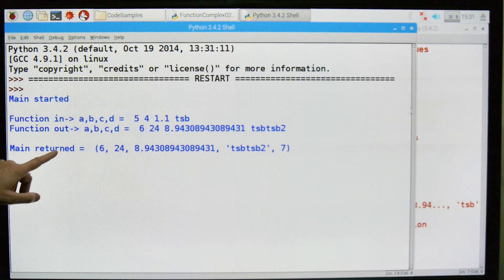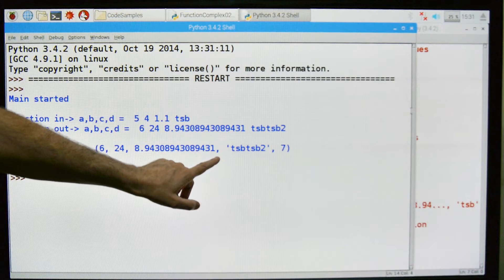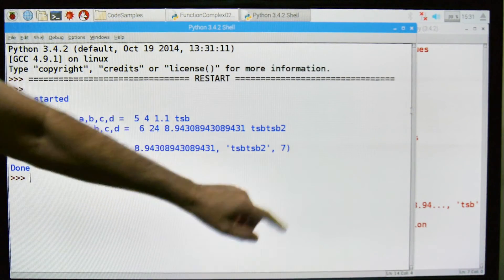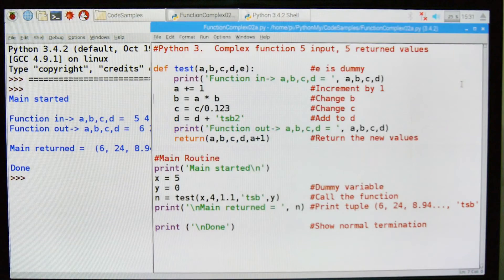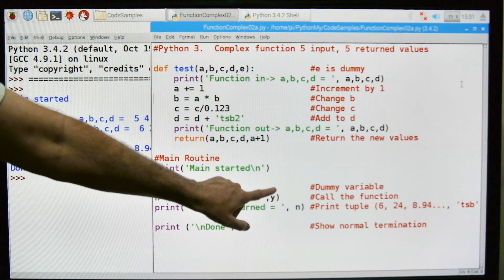And here's what the main received when the function was completed. This is what was returned, 6, 24, 8.94, etc. TSB, TSB2, and this 7. And this 7 comes from that a plus 1. So that's why I have this dummy here.